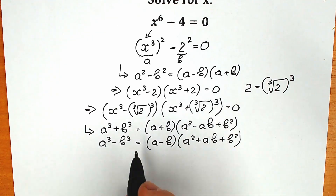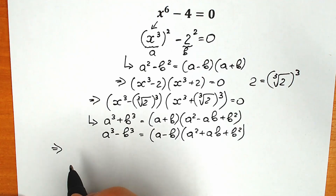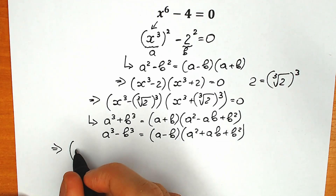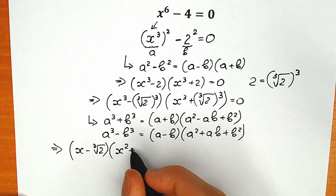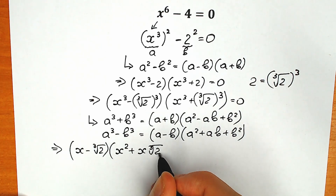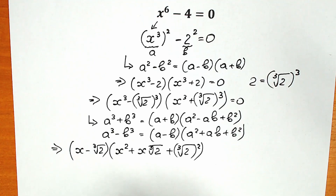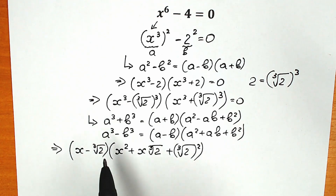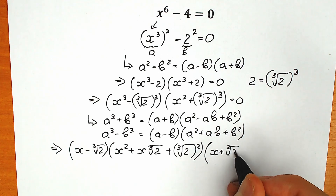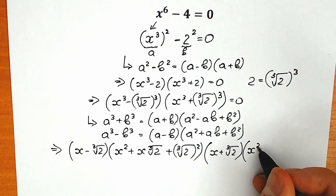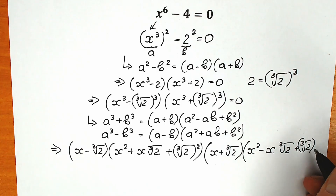Now let's apply these formulas. For the difference of two cubes on the left, we get x minus cube root of 2, times x squared plus x times cube root of 2, plus cube root of 2 to the second power. For the sum of two cubes on the right, we get x plus cube root of 2, times x squared minus x times cube root of 2, plus cube root of 2 squared, equal to zero.